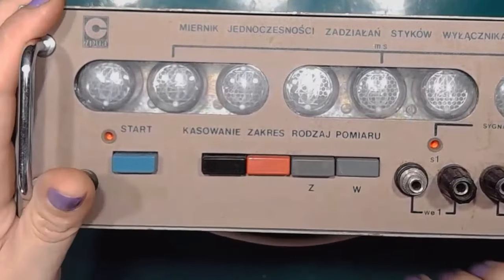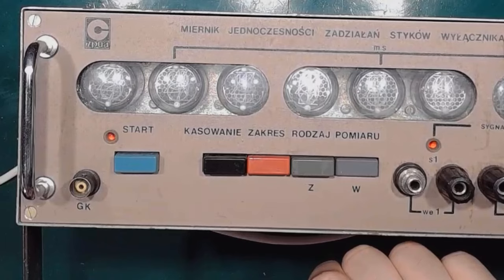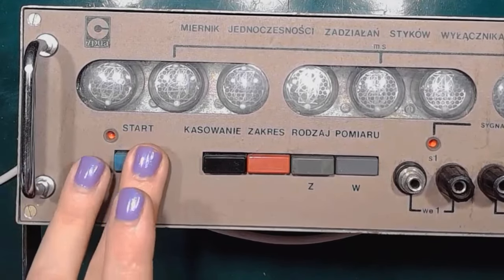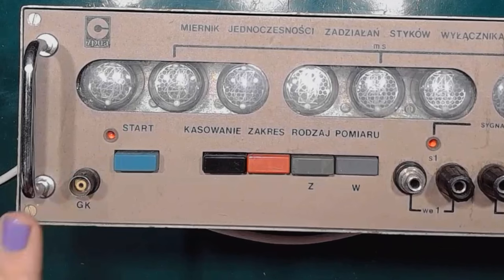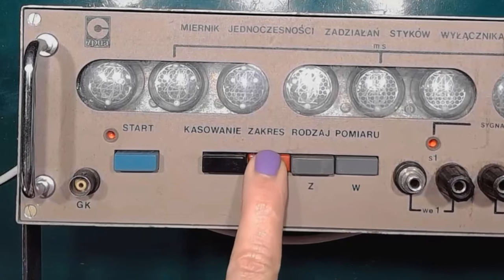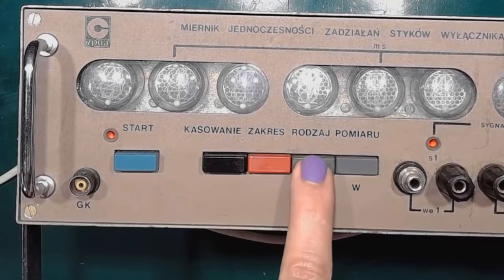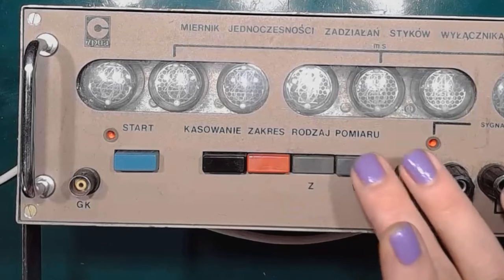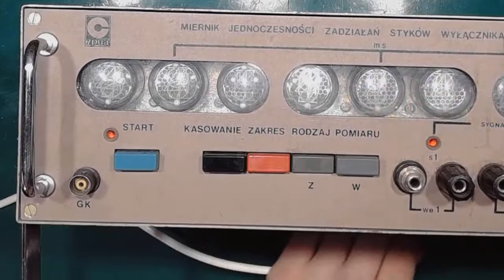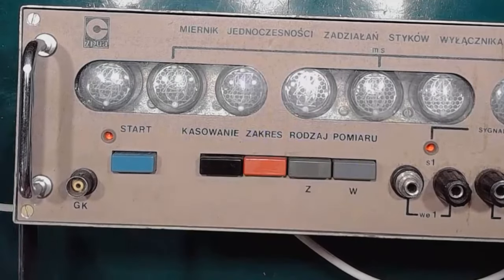So on the front panel we've got a BNC socket and a start button. As it will soon turn out, the socket is parallel with the button, allowing for external control. Now, the reset button, range switch button times one or times ten, and two modes, which is one for testing the on contact and the normally open contact, and the other one for testing the normally closed contacts.